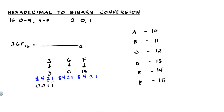Next we have 6. 6 is the sum of 4 and 2, so those positions are 1's. We don't use 8, so that's 0. And we don't use 1, so that's 0. So 6 is equivalent to 0, 1, 1, 0 in binary.